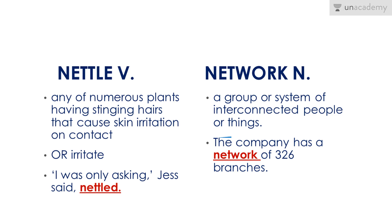Network — noun. A group or system of interconnected people or things. In a sentence: The company has a network of 326 branches.